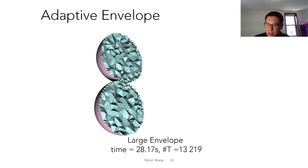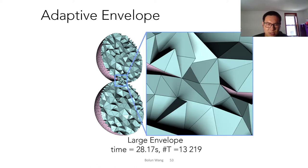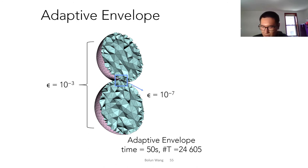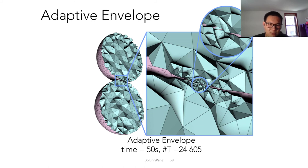Sometimes it's not enough to use one envelope size globally. For example, consider two spheres that are very close but separated — if we use a large envelope globally, the gap between the two spheres disappears. Our algorithm makes it straightforward to set a smaller envelope where we want to preserve features, and a larger envelope where we are far from critical areas. This gives a finer mesh to preserve the gap and a coarser mesh elsewhere. We call this adaptive envelope, which we believe is very useful.